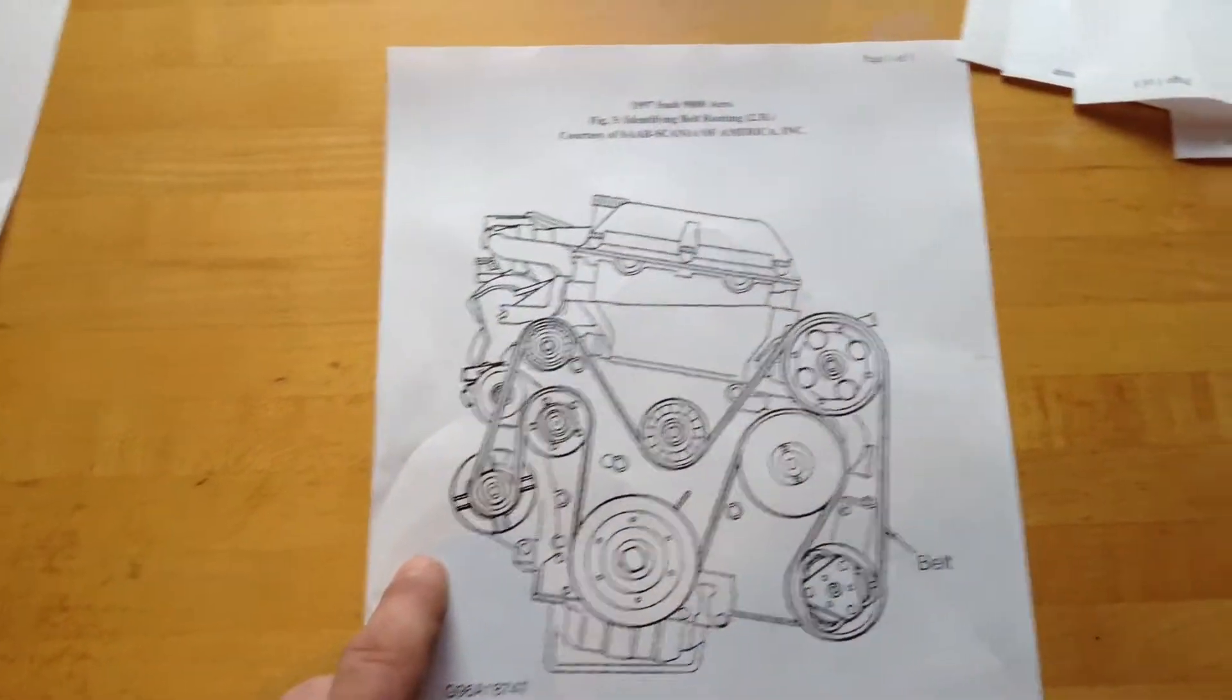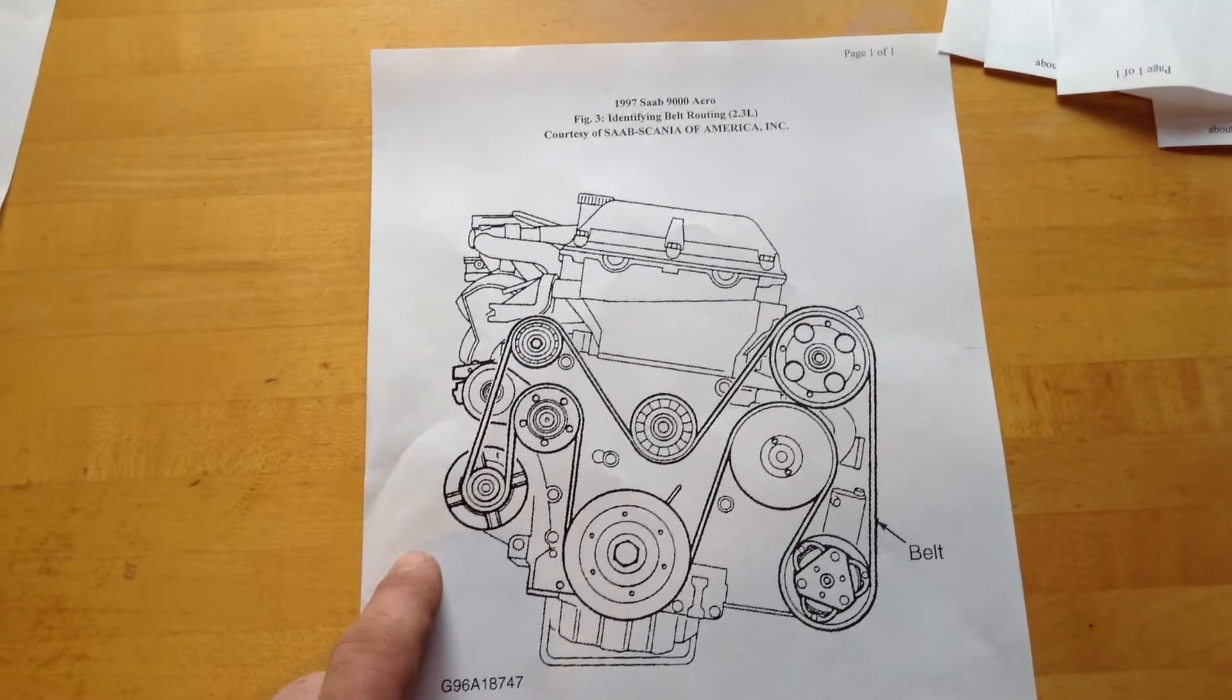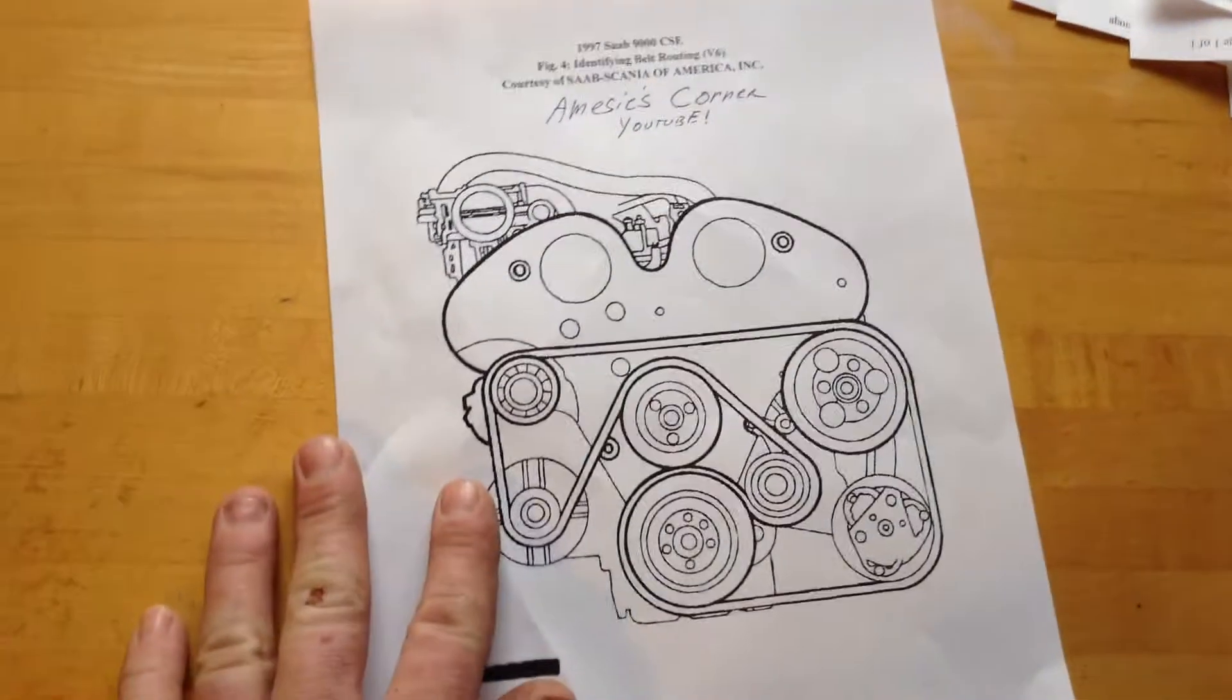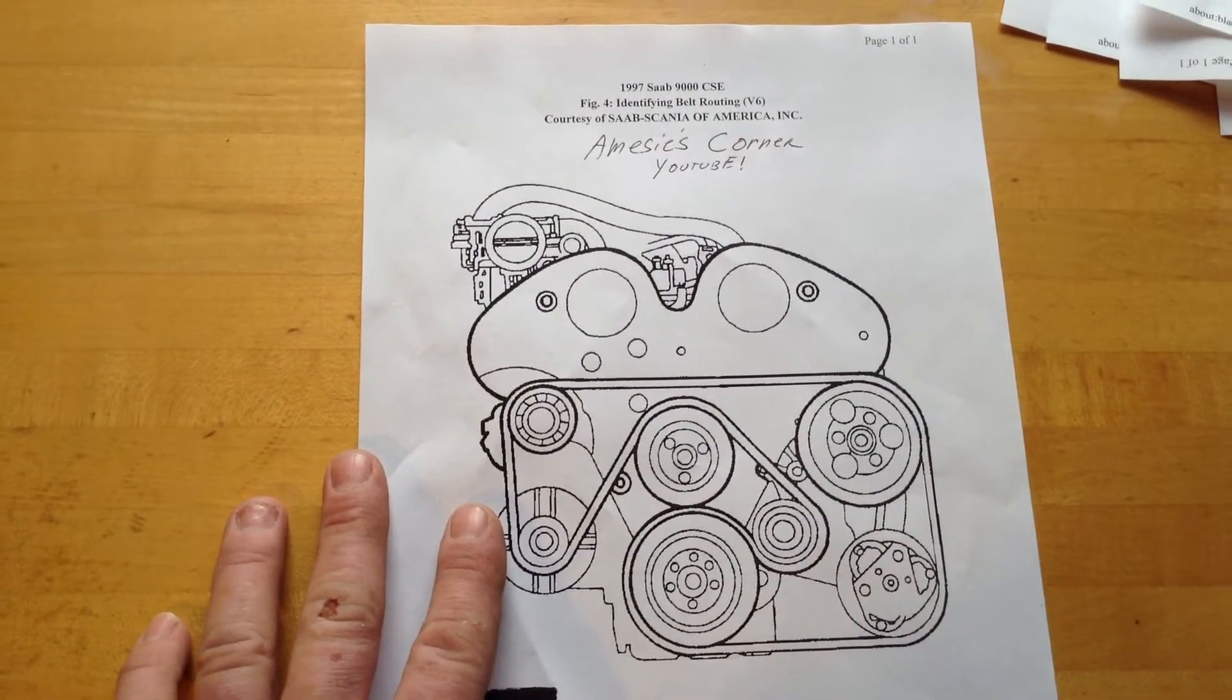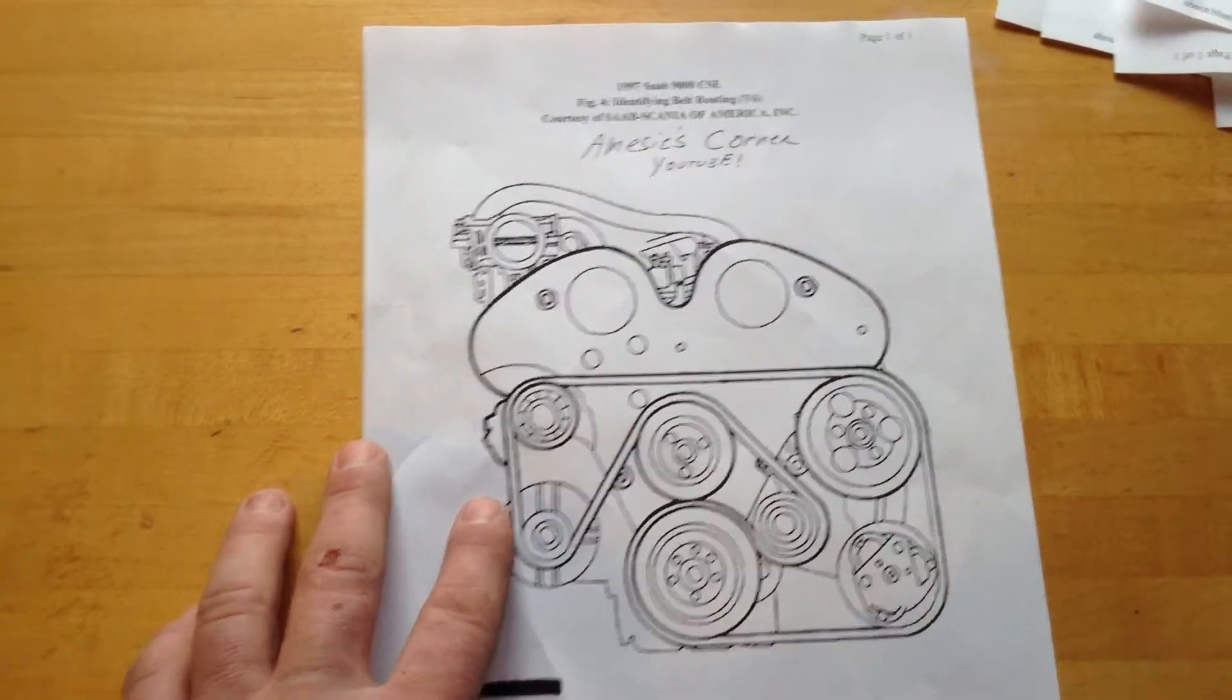So if this is something that looks like what you got, well there you go. And then there's the V6. There's the V6 belt routing.